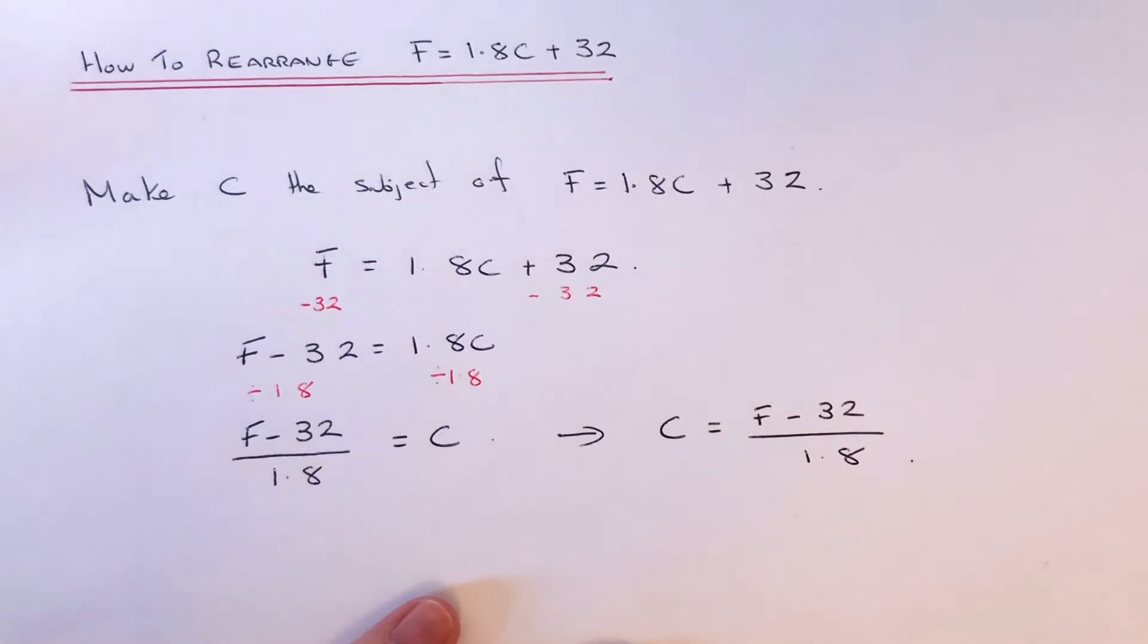Okay, so our formula for working out the temperature in Celsius is F minus 32 divided by 1.8. So I hope you liked this video. If you did, make sure you like and subscribe, and thanks for watching. Bye bye.